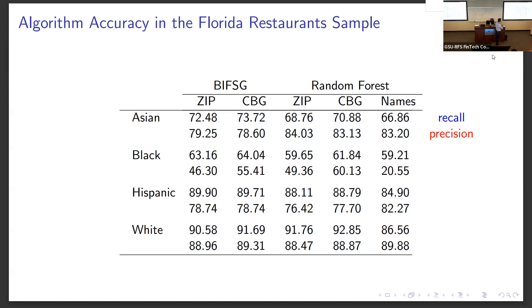We also report, as a benchmark, a random forest that uses only name information, and that performs quite poorly — in particular, in terms of precision.